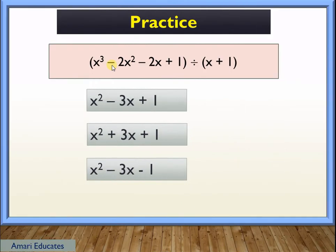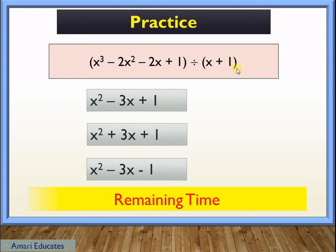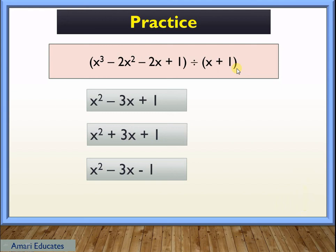Next: divide the quantity of x cubed minus 2x squared minus 2x plus 1 by the quantity of x plus 1. You can pause the video if you need more time. The answer is x squared minus 3x plus 1.